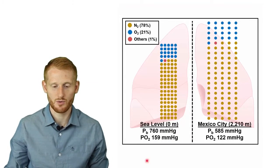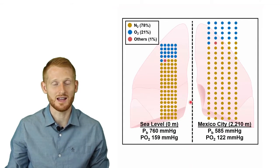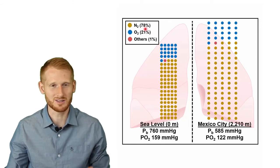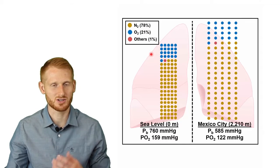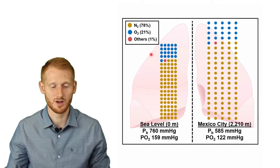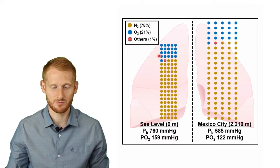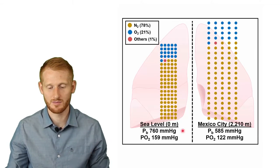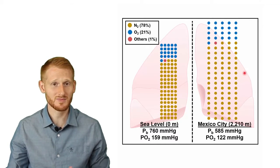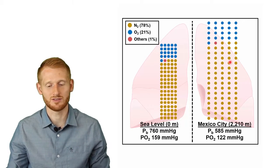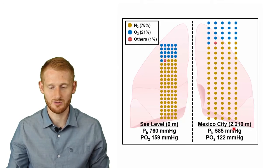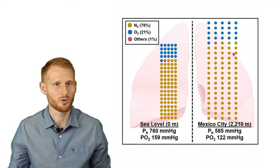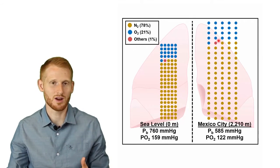Looking at this diagram, air at sea level is about 21% oxygen, about 78% nitrogen — which our bodies don't really use — and about 1% a mixture of other things including CO2. If you look at that same configuration at altitude — specifically Mexico City at 2,210 meters — the air spreads out quite a bit, and the reason for this spread is pressure.